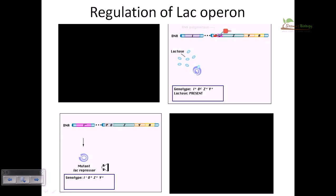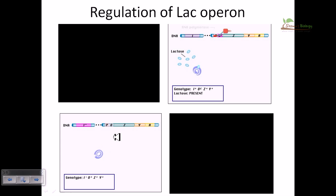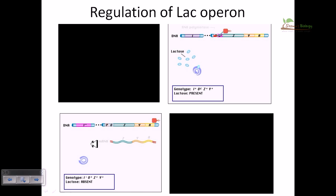In the third animation, we consider a mutant lac repressor protein produced by a mutant repressor gene — this repressor has lower affinity towards the operator region, while all other regions remain wild type. As a result of this low affinity, the repressor cannot bind the operator, so RNA polymerase can sit and easily transcribe even when lactose is absent.